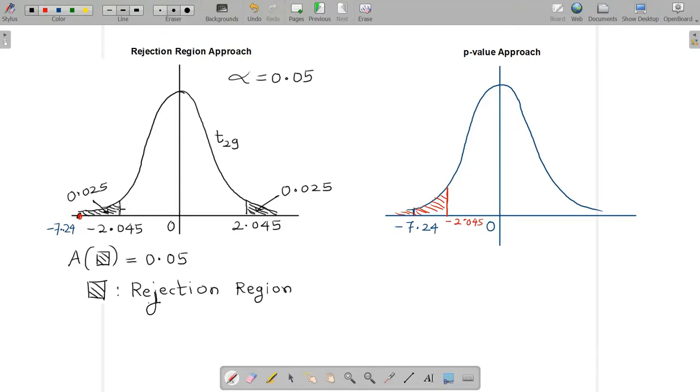Whereas in the p-value approach, what we do is we locate directly the particular test statistic and find the area under the curve.